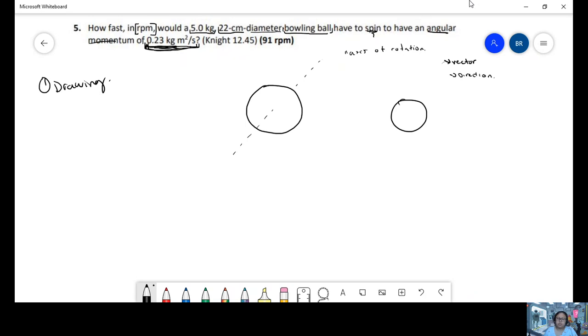For rotation, clockwise is in the negative direction, and counterclockwise is in the positive direction. So we're going to assume that this bowling ball is going to spin counterclockwise, because it's positive.